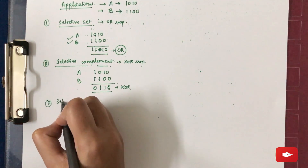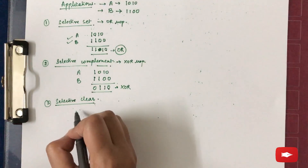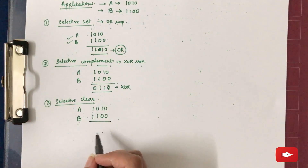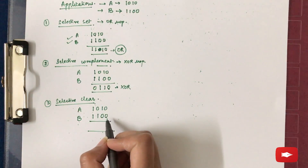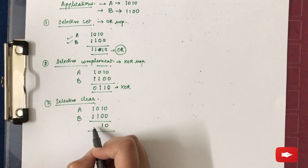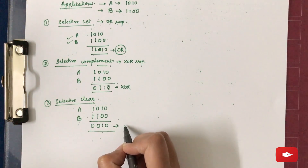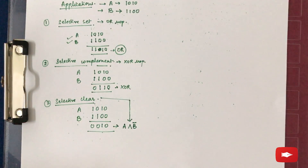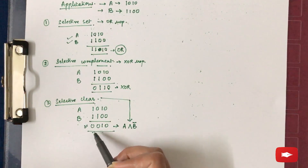The third application is selective clear. In selective clear, with A as 1010 and B as 1100, wherever the value of B is 1, we set the value of A to 0. Where the value of B is 0, the value of A remains unchanged. Looking at the result, it is quite similar to the operation A AND B-complement. By comparing the truth tables, selective clear is equivalent to A AND NOT-B.